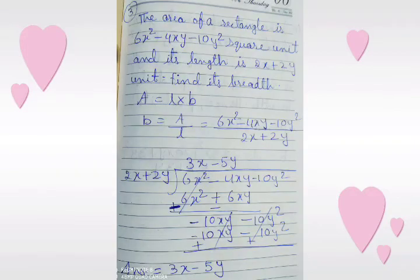Question number 3: The area of a rectangle is 6x squared minus 4xy plus 10y squared units and its length is 2x plus 2y units. Find its breadth. As we know, area equals length into breadth, so breadth equals area divided by length. Area is given, length is given — we will divide it.